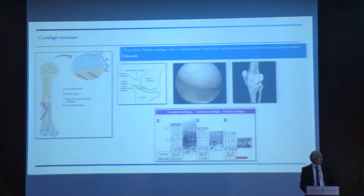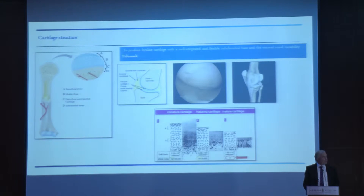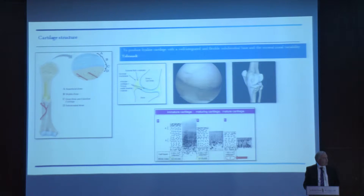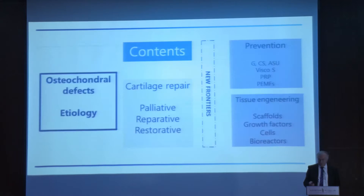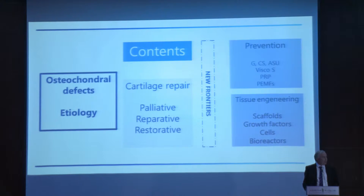You probably know the different layers of the cartilage. What is important is this specific zone of transition between the cartilage and the subchondral bone — a tidemark — and this is what is the most difficult to reproduce when we use different techniques.